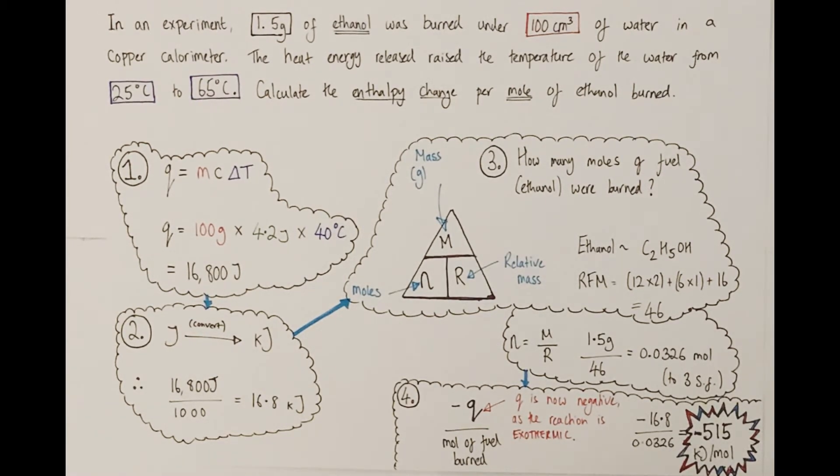In an experiment, 1.5 grams of ethanol was burned under 100 centimeters cubed of water in a copper calorimeter. The heat energy transferred and released raised the temperature of the water from 25 degrees centigrade to 65 degrees centigrade. You are asked to calculate the enthalpy change per mole of ethanol burned.